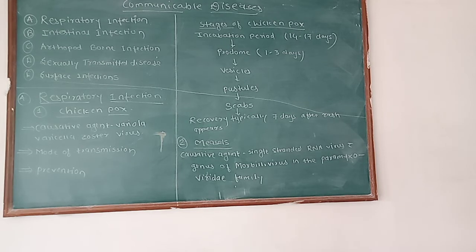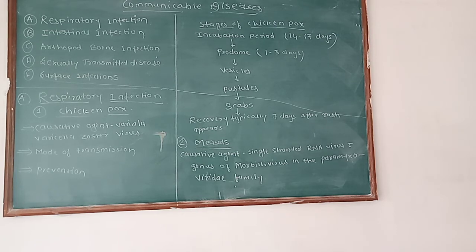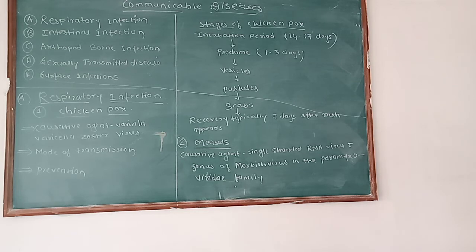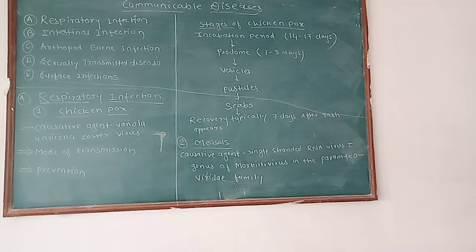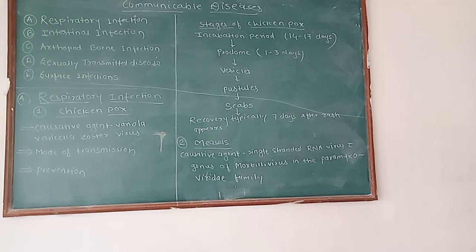So far we have seen the definition of communicable disease, its examples, respiratory tract infection, and its types. Now we will discuss our first disease, which is chicken pox. For each communicable disease, we need to discuss its causative agent, mode of transmission, and prevention measures. So, the first is chicken pox.